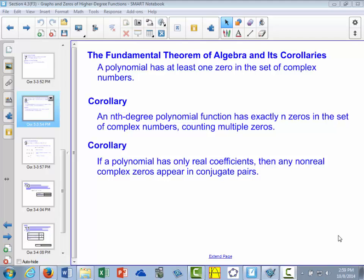The fundamental theorem of algebra states that a polynomial has at least one zero in the set of complex numbers. So there absolutely has to be at least one solution to any polynomial.